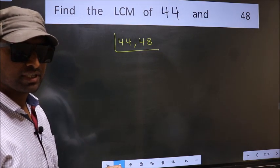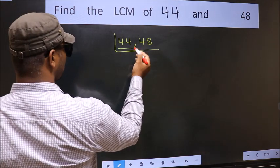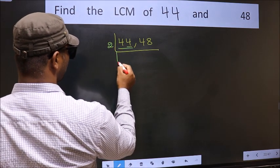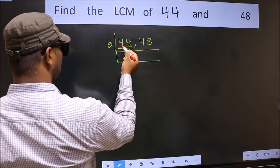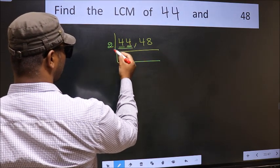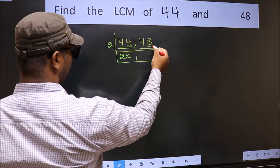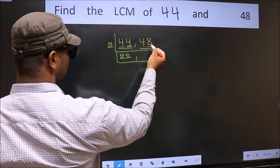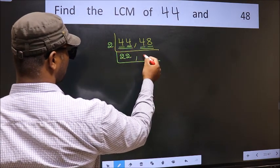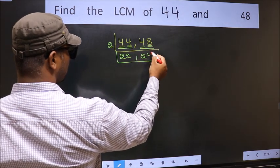Now focus on the first number which is 44. The last digit is 4, even, so take 2. First number 44, when do we get 22 in 2 table? 2 times 22 is 44. The other number 48, 2 times 24 is 48. Now the other number 24, when do we get 12 in 2 table? 2 times 12 is 24.